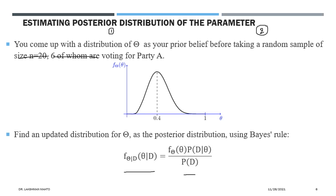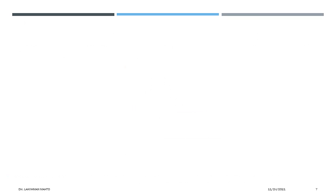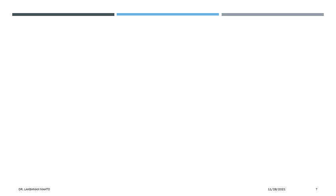From the posterior distribution, you can find a point estimate or interval estimate. One approach is to find the argument that maximizes the posterior distribution — this is MAP estimation. Both point and interval estimation can be performed from the posterior; interval estimation is more reliable than point estimation and can be built upon it.